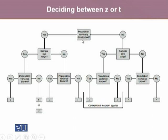If our population is normally distributed, and we can say that yes, it is normally distributed, the next question we ask is: is the sample size large? If the sample size is large, the next question we ask is: is the population variance known? If the population variance is known, with a large sample size and normally distributed population, the distribution we use will be a Z distribution.